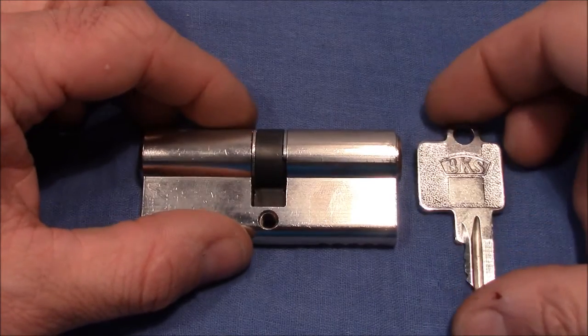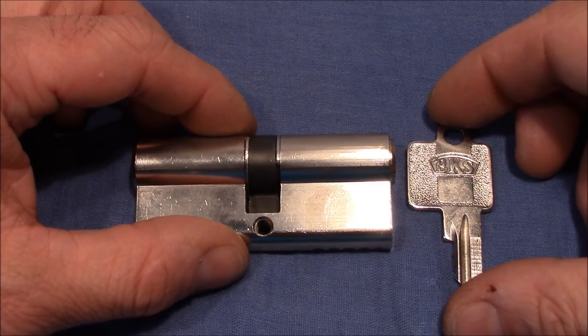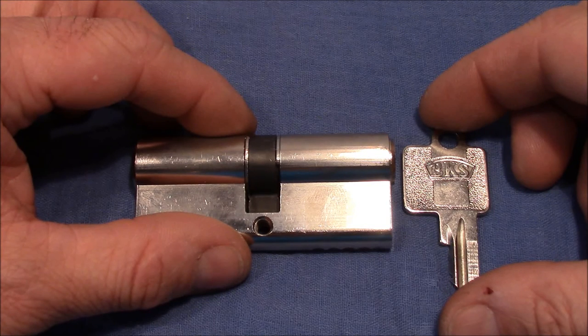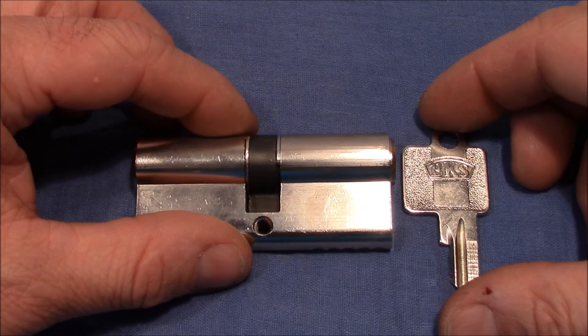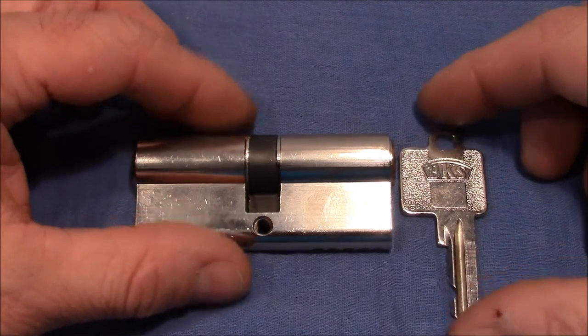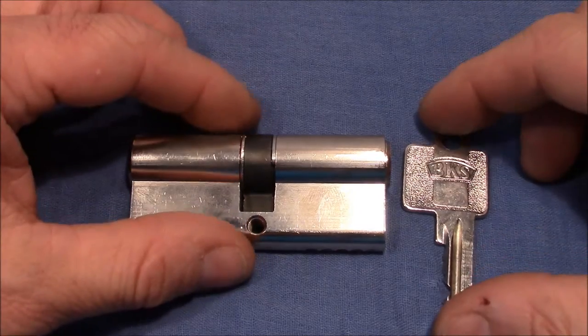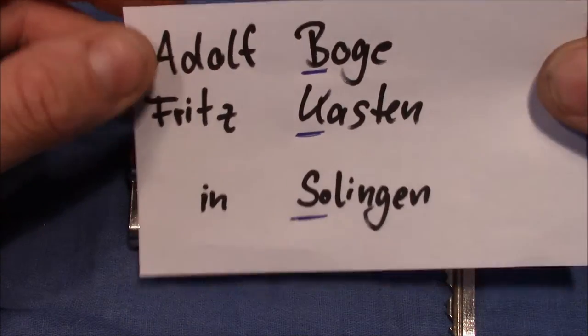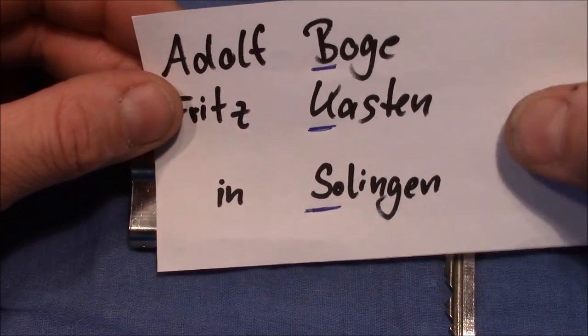BKS is a German lock company that was founded in 1903 by two gentlemen named Adolf Boge and Fritz Kasten in the German city Solingen. Later on in 1927 they were bought by the US company Yale and Towne and they also bought some other companies and combined them together to one big company named BKS in the German city Velbert. I think the name BKS comes from the original founders Adolf Boge and Fritz Kasten and the original city Solingen.